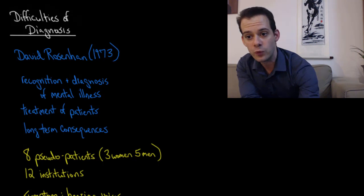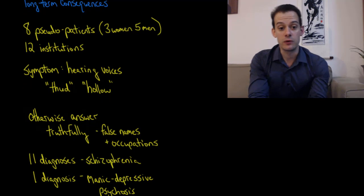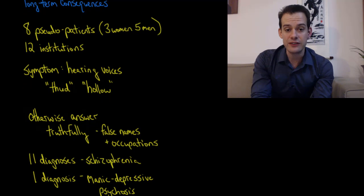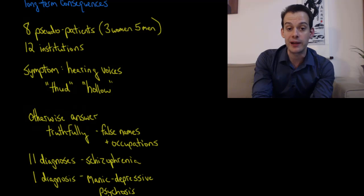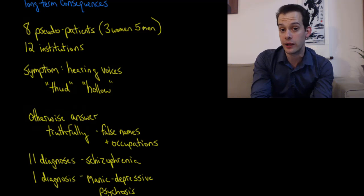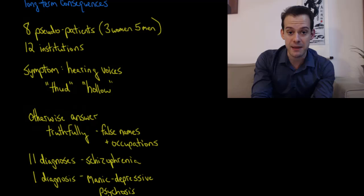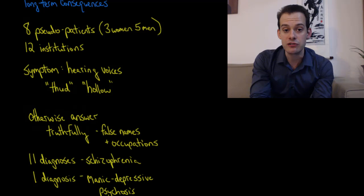So what Rosenhan did was he had eight pseudo patients, three women and five men, and they went to 12 different institutions and had a consultation with a psychiatrist where they reported a single symptom of mental illness: they were hearing voices. So they had this auditory hallucination and were hearing voices saying words like thud or hollow, and otherwise they reported being normal. They gave personal histories answering questions about their family background, and with the exception that they gave false names and occupations to disguise the fact that they worked in the mental health field, they answered the questions truthfully.